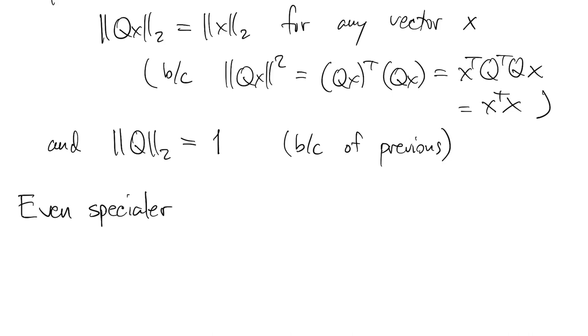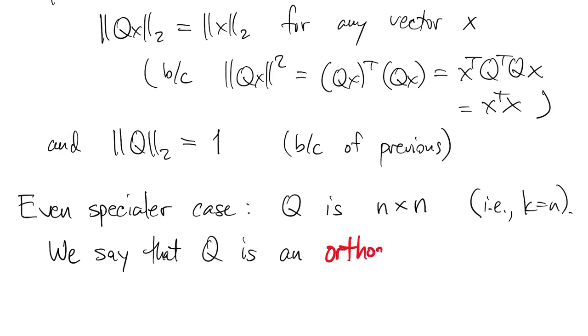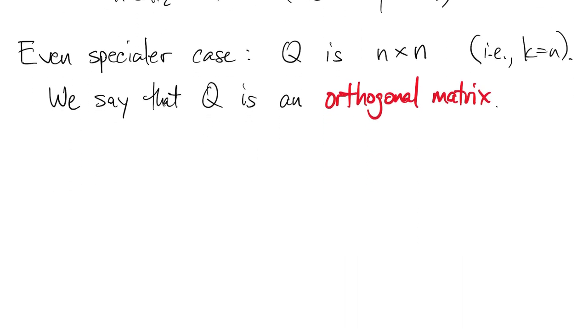Now we can get even more specialized. That's when Q is actually a square matrix, so k is equal to n. The number of vectors equals the dimension of the space that they're in. So if they're orthonormal and you have n of them, then we call Q an orthogonal matrix, which is confusing. It should be orthonormal matrix, but that's what we say. Orthogonal matrix means orthonormal columns and square.